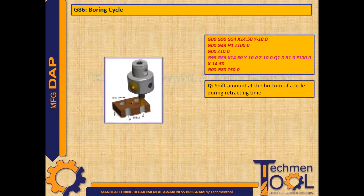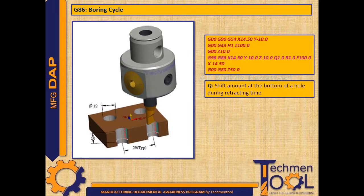G86 is used for boring cycle. In this sample program, after the rapid movements as per instructed positions, the boring cycle starts along with position X14.5 Y-10 Z-10 with Q value 1 unit at the feed rate of 100 microns. Here R is the R plane or reference plane. Q is the shift amount at the bottom of the hole during retracting time. After the boring cycle, G80 code cancels it and G98 code returns the tool to the initial point.